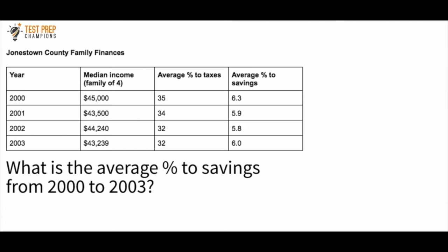Jonestown County Family Finances shows data for years 2000 through 2003. We see the median income for a family of four, the average percent to taxes — 35, 34, 32, and 32 — and the average percent to savings — 6.3, 5.9, 5.8, and 6.0. The question is: what is the average percent to savings from 2000 to 2003? Pause the video, use a calculator if you'd like, and when you're ready we'll talk about it.